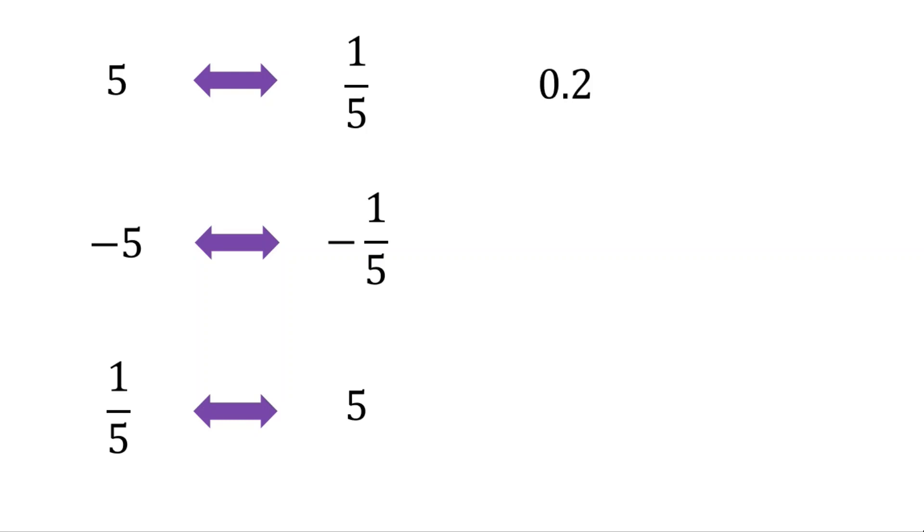Now 0.2. Well, this is a trick question because 0.2 is just 1/5 already. So the reciprocal of 0.2 is 5. Do not get thrown off by the fact that decimals can appear. It is generally easier to turn that decimal into a fraction and then find the reciprocal.